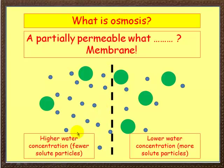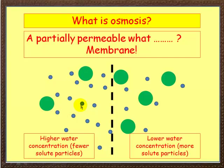Here we've got a high water concentration on this side and a low water concentration on this side. It's the number of particles you've got. The blue ones are water particles — there are more water particles on this side than on this side, so this has got a higher water concentration and this has a lower water concentration. Imagine the green ones are sugar, so here we've got a very dilute sugar solution. Dilute means loads of water present and few solute particles — the sugar is the solute — so here we've got a dilute sugar solution because there are few solute particles and lots of water.